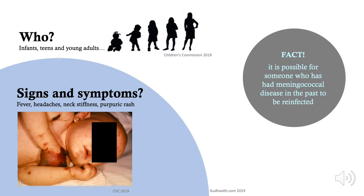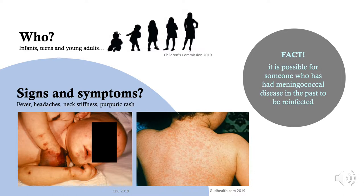If a purpuric rash forms, septicemia is often the cause and holds a mortality rate of about 50%. If the disease is not treated at all, it has a high fatality rate of up to 50%, which mostly occurs within the first 24 hours. Furthermore, a complication of septicemia is gangrene and the loss of limbs in some instances.